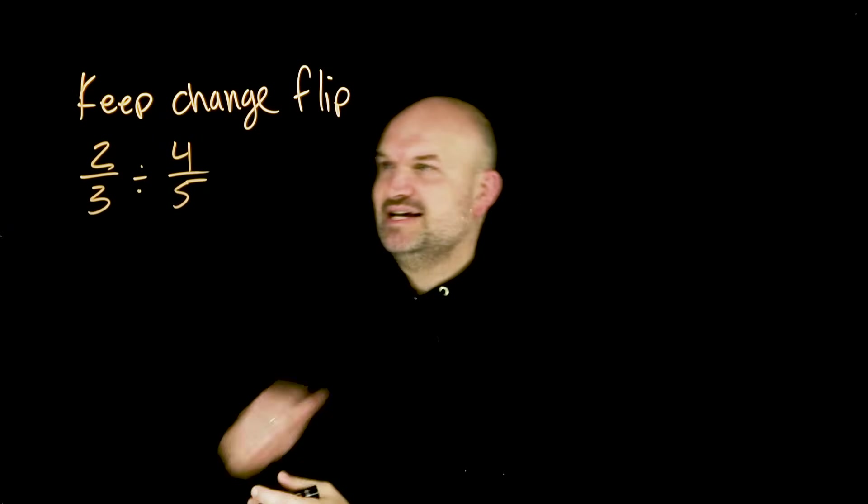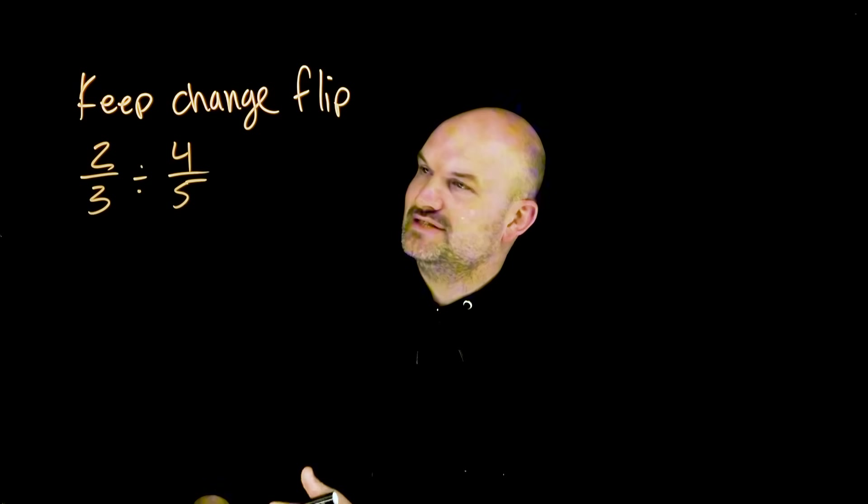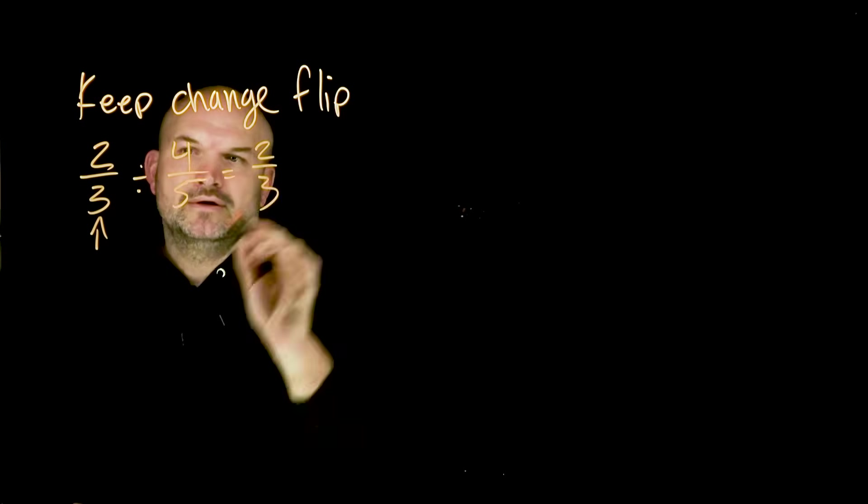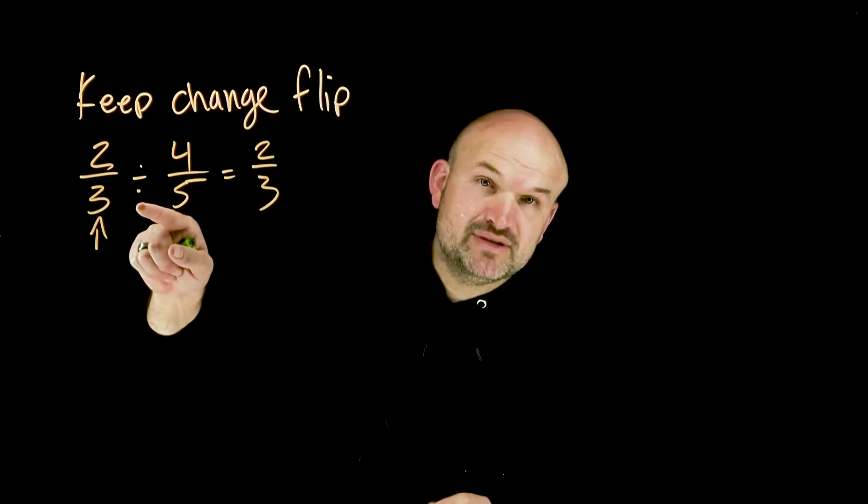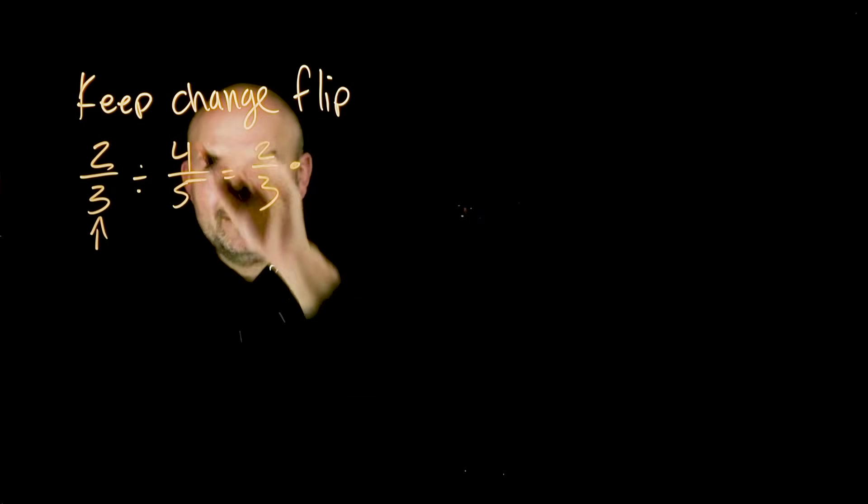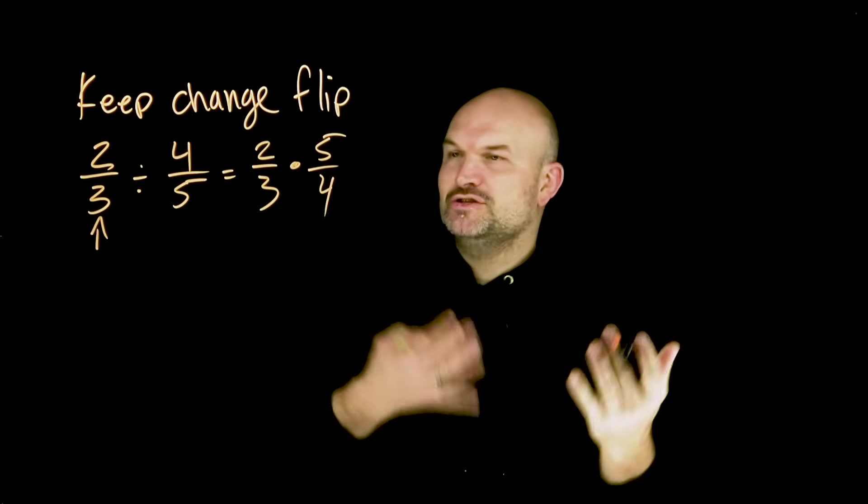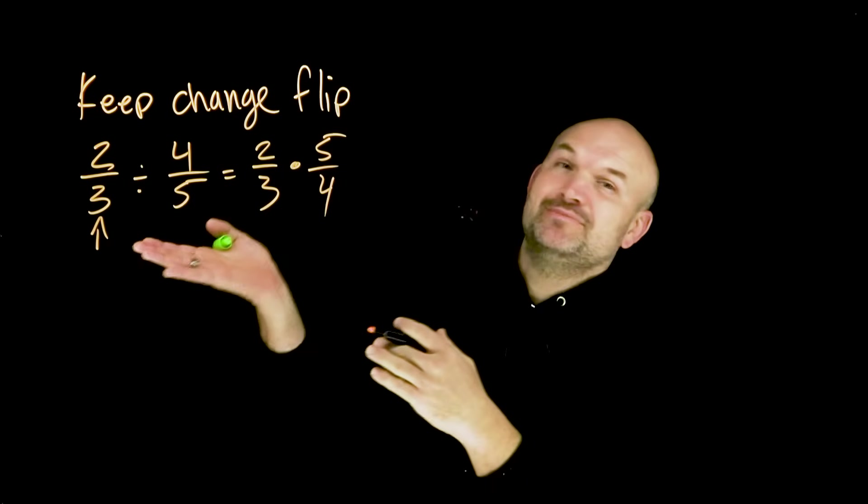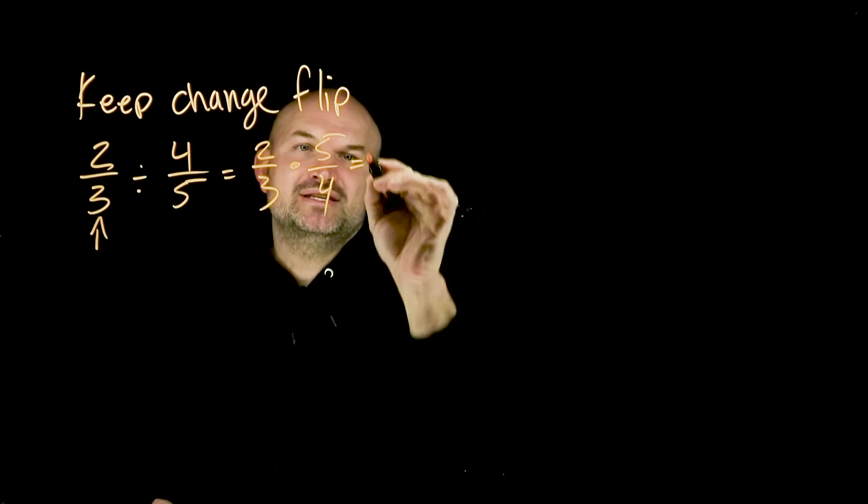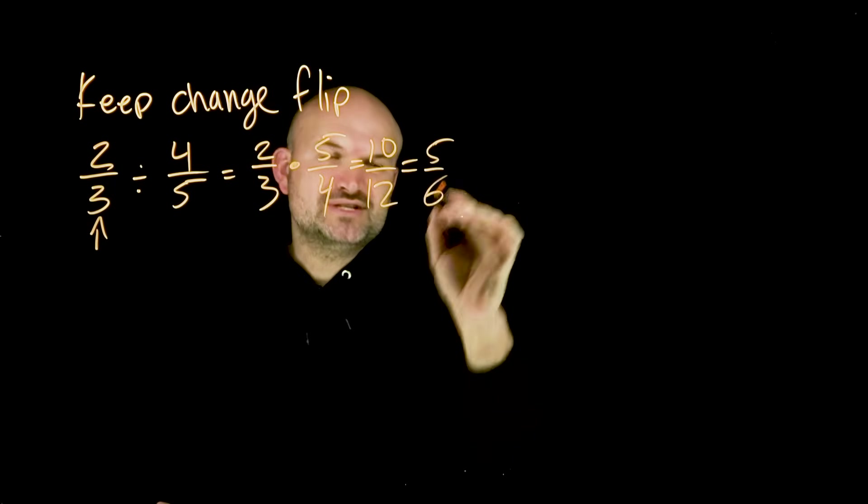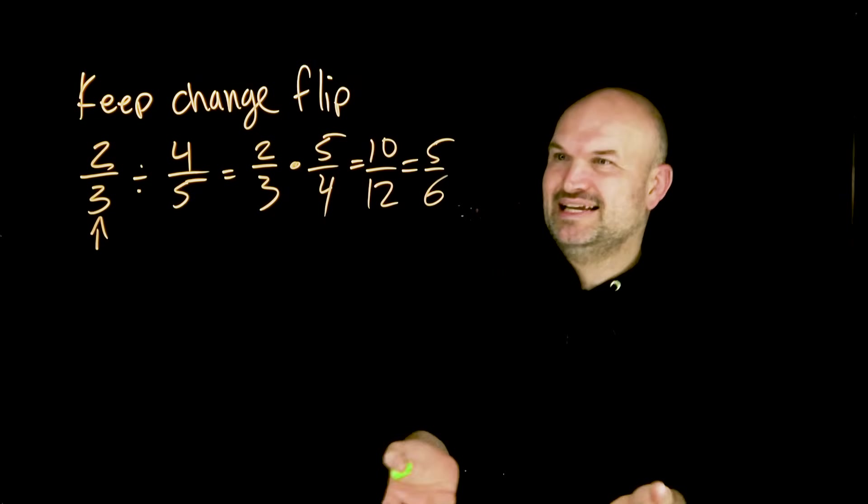So in this case, I have two thirds divided by four fifths. Now the keep change flip method basically says you're going to keep the first fraction. You are going to change from division to multiplication, and then you're going to flip the second fraction. Now, most students prefer to do multiplication with fractions because all you simply need to do is multiply straight across. So in this case, we get a 10 over a 12, which can be reduced to a five over six. And it's not that bad. It's actually pretty easy to remember.